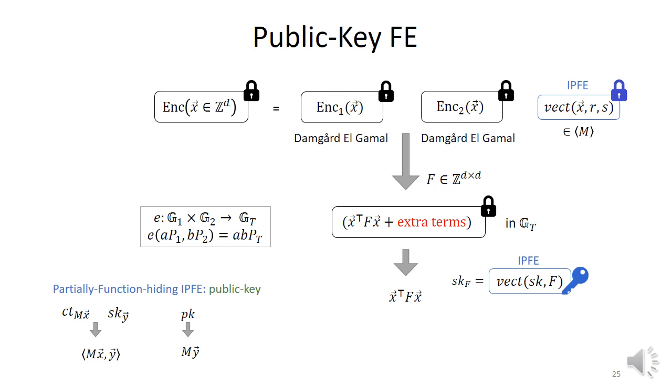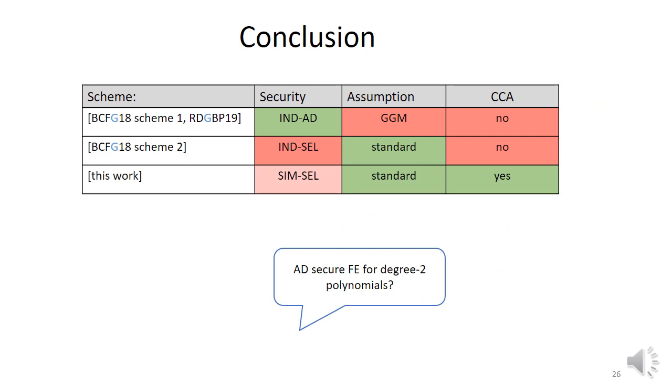And the reason we can afford to only generate inner product FE encryption for vectors that lie in some specific span is because we use slightly more structure than Elgamal. We use actually Downgard Elgamal, tiny bit more structure, but still much less complicated than what was used before. And that implies that the vector has a special structure that we can exploit to bypass the impossibility result of a public key function hiding.